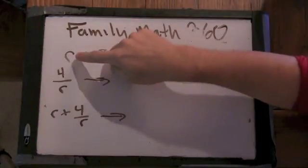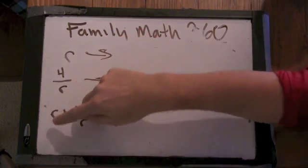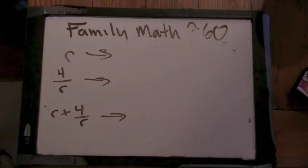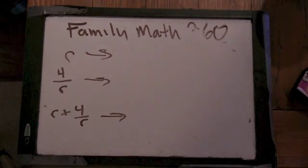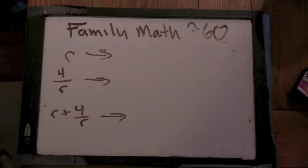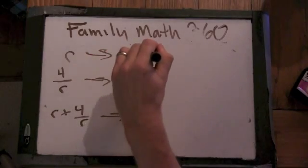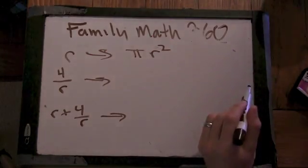So I have three radiuses: r, 4 over r, and r plus 4 over r. So what is the area of the circle whose radius is r? Well, you need to multiply by pi r squared. Pi r squared. That's the formula.